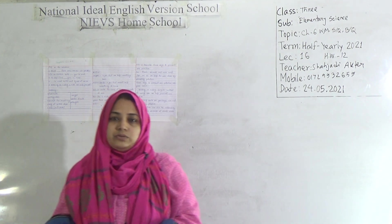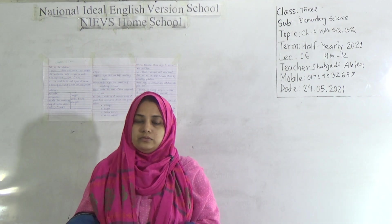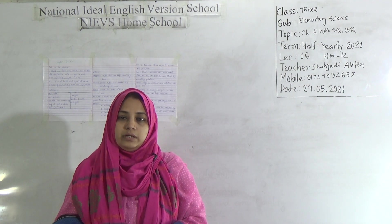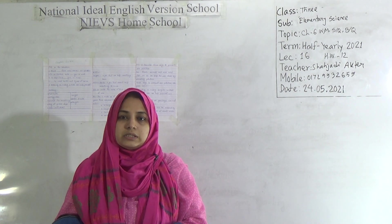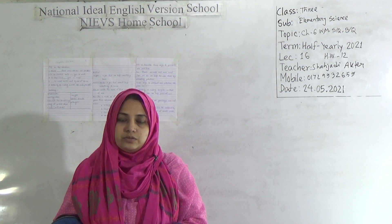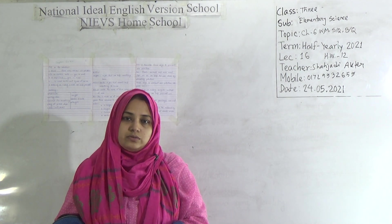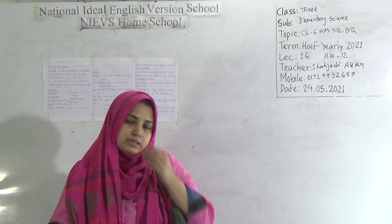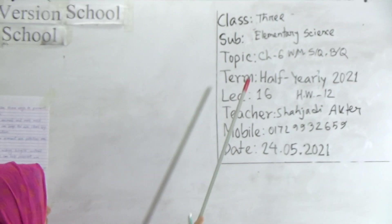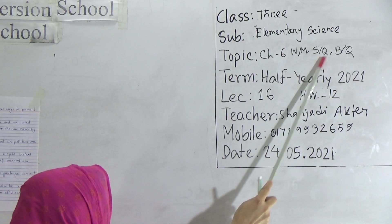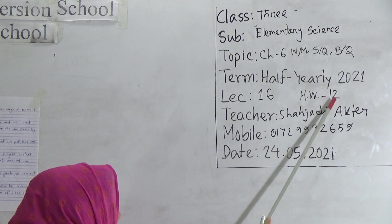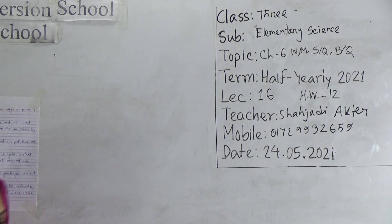Salam alaikum my dear students, how are you? Hope all of you are well by the grace of Almighty Allah. Welcome to NIABS Homeschool. This is Shahjad Yaktar, assistant teacher of science at National Ideal English Medium School. Today I am going to take an elementary science class for Class Three students. Our today's topic is Chapter Six: word meaning, short question answer, and broad question answer. Today's lecture number is 16 and homework number is 12.